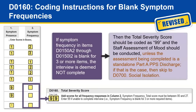Here is an illustration of another scenario, one in which the symptom frequency was blank for three of the items. The guidance states: if the symptom frequency in items D0150A2 through D0150I2 are blank for three or more items, the interview is deemed not complete. The total severity score should be coded as 99, and the staff assessment of mood should be conducted, unless the assessment being completed is a standalone Part A PPS discharge — if that is the case, then skip to D0700 Social Isolation. In this example, you would enter 99 as the total severity score.